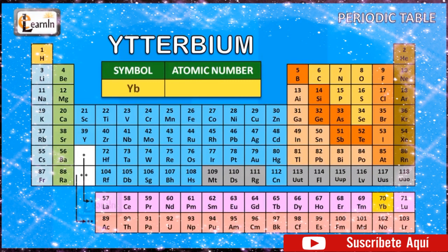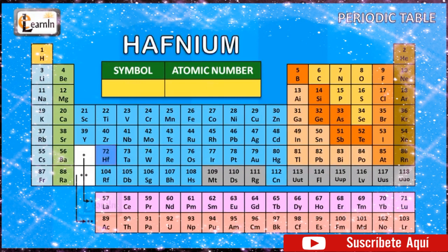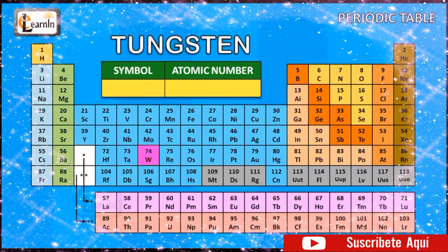The element ytterbium is represented as Yb and has an atomic number of 70. The element lutetium is represented as Lu and has an atomic number of 71. The element hafnium is represented as Hf and has an atomic number of 72. The element tantalum is represented as Ta and has an atomic number of 73. The element tungsten is represented as W and has an atomic number of 74.